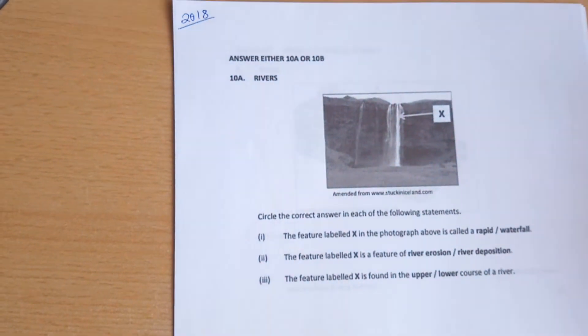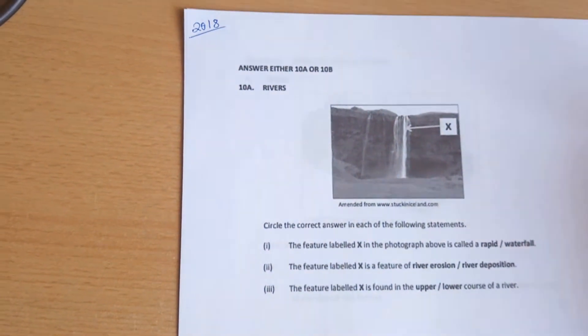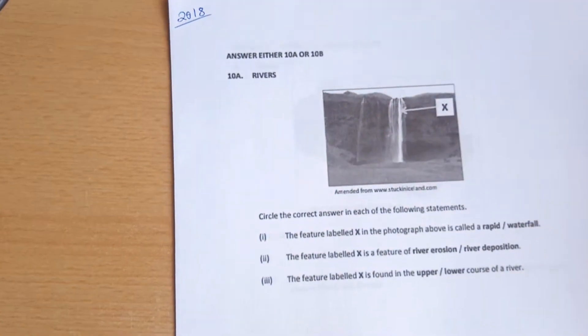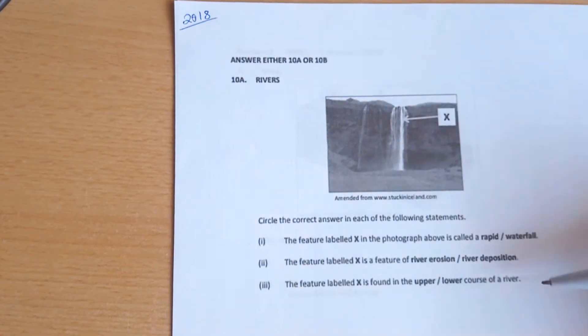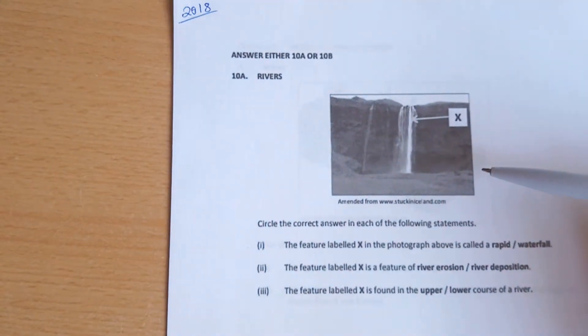Here we have a short question on rivers from the 2018 Junior Cert Geography paper. We have three short questions to circle the correct answer based on the photograph.